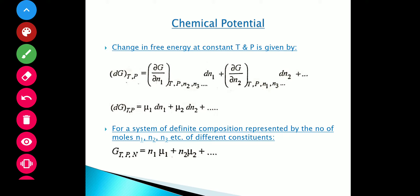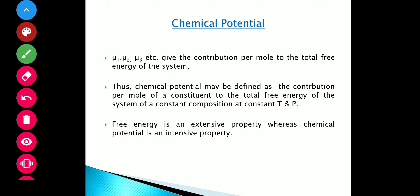The change in free energy at constant temperature and pressure is given by this expression, which equals mu1·dN1 plus mu2·dN2, and so on. For a system of definite composition with fixed amounts N1, N2, N3, the total free energy of the system equals N1·mu1 plus N2·mu2 plus N3·mu3, and so on. So mu1, mu2, mu3 give the contribution per mole of each constituent to the total free energy of the system. Thus we define chemical potential as the contribution per mole of any constituent to the total free energy of the system at constant composition, constant temperature, and constant pressure.